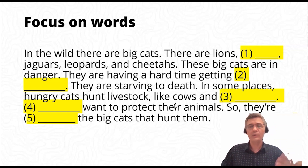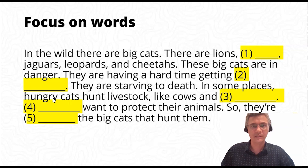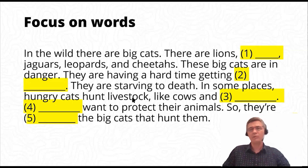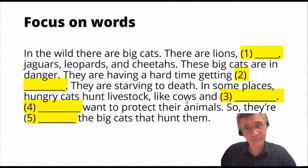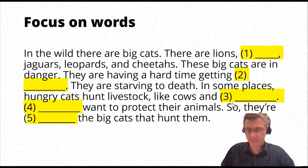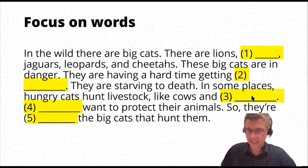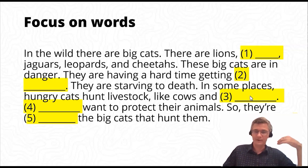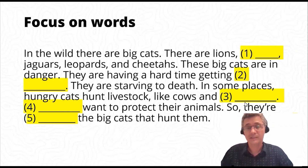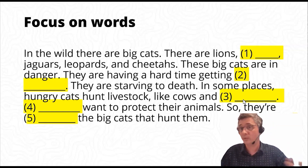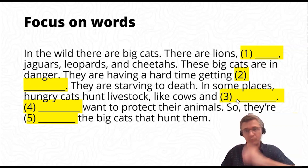For number three: hungry cats hunt livestock. Students probably don't know this word, but the text explains it as 'like cows and something.' We know the word cow — where do you find cows? On a farm. What else do you find on a farm? Chickens, sheep, goats, pigs. So this word is probably one of those — a farmyard animal found on a farm. We can pick one and put it in there. For number four: someone wants to protect their animals. Who looks after cows and sheep? Who is it who protects their animals? Probably a farmer.